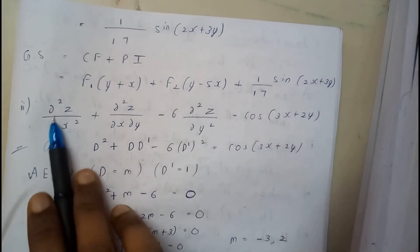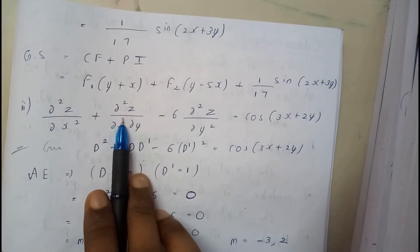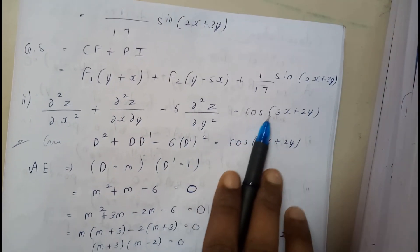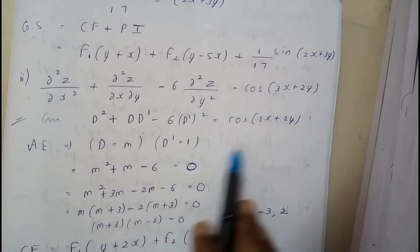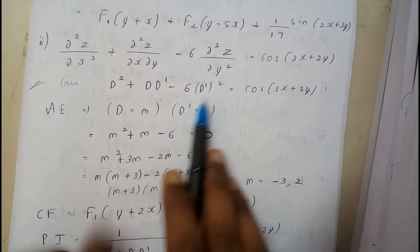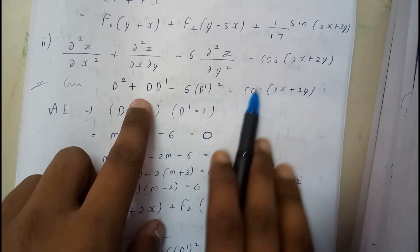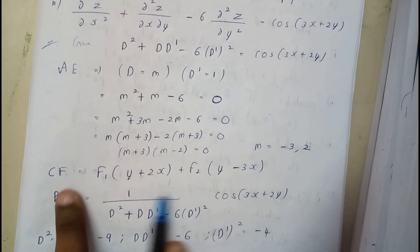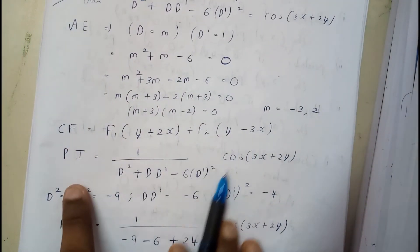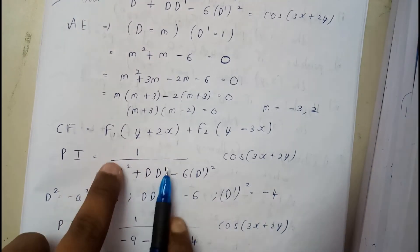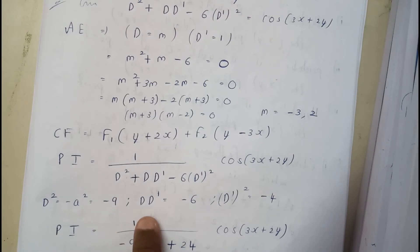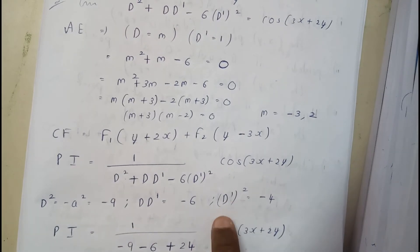The second problem is: ∂²z/∂x² + ∂²z/∂x∂y − 6∂²z/∂y² = cos(3x + 2y). Here a = 3 and b = 2. We first set the left side to zero, find the auxiliary equation, find the roots, and find the complementary function. Then for the particular integral, we substitute D² = −a², DD' = −ab, and D'² = −b².